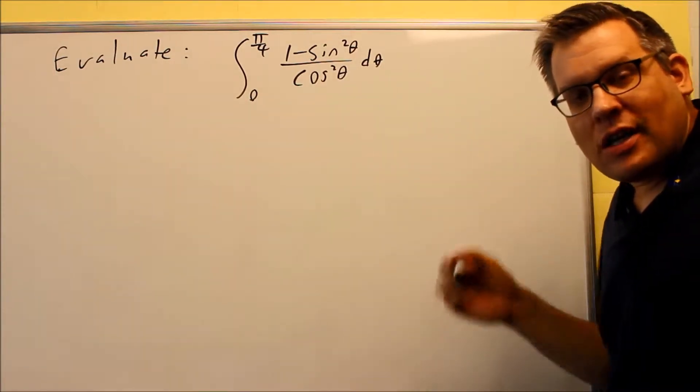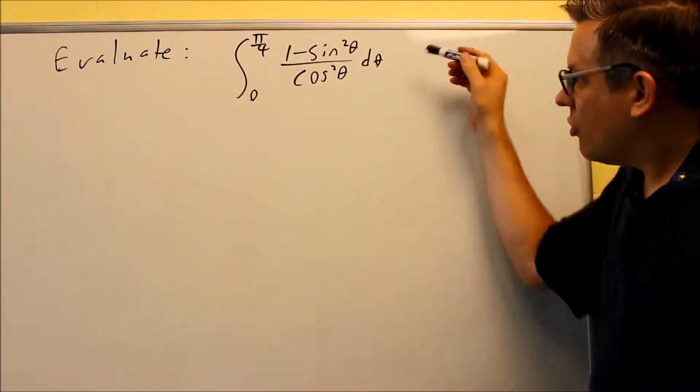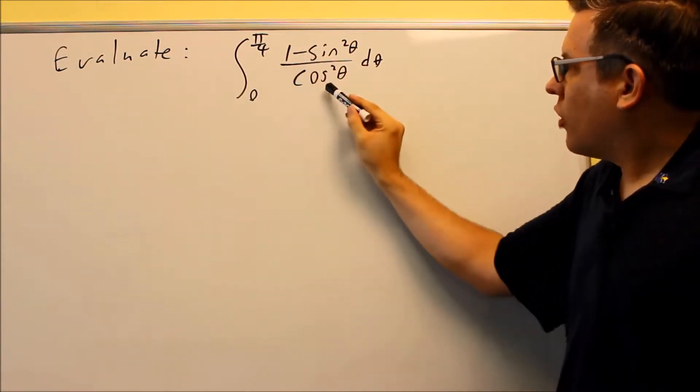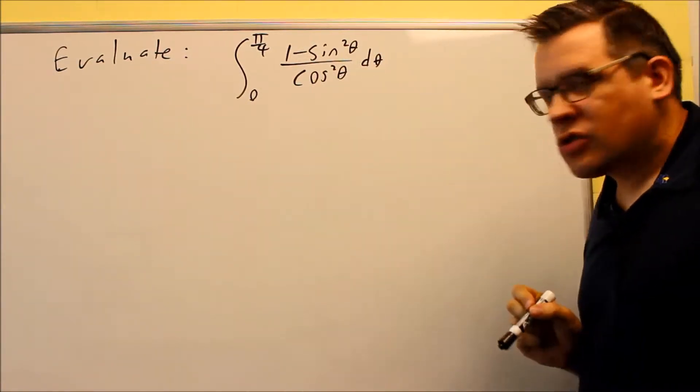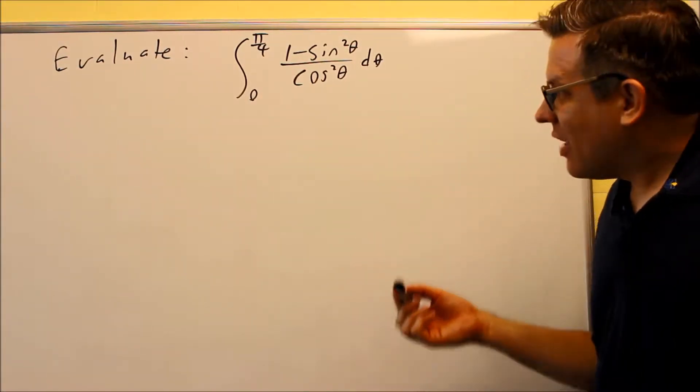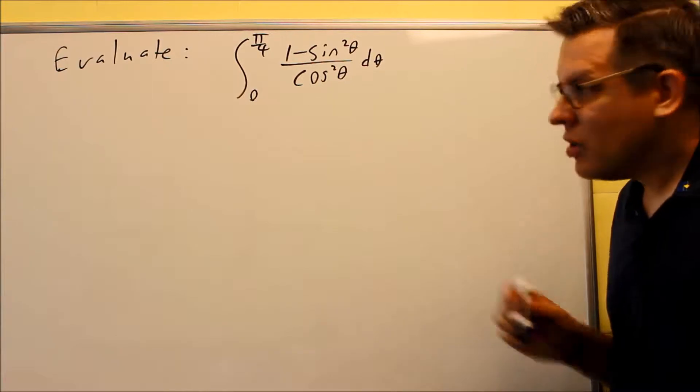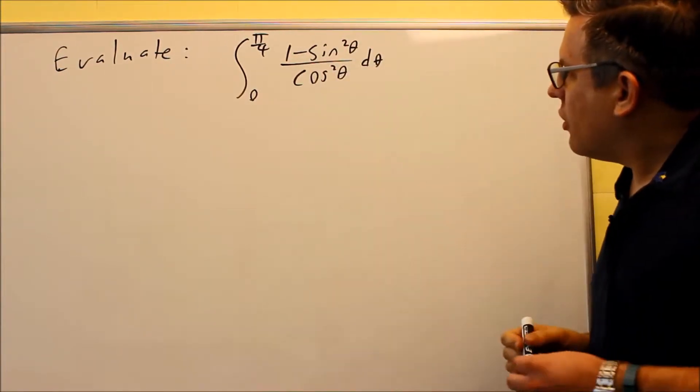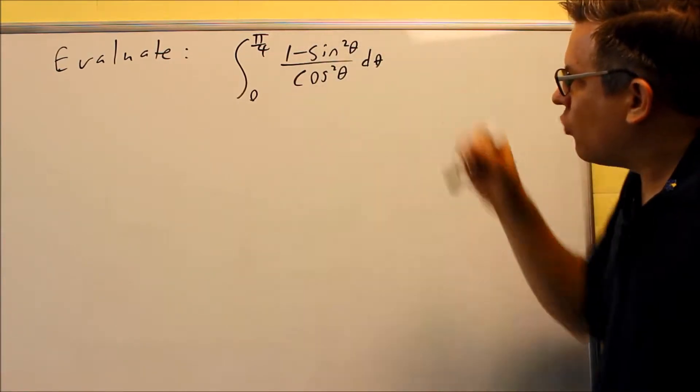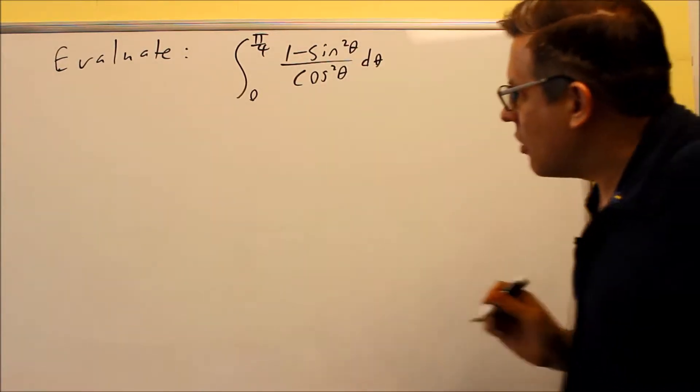Now, sometimes it's going to be easier if you use a trig identity first. Now, we could separate this and do 1 over cosine squared and sine squared over cosine squared. So we could do that and get secants and tangents, but that's actually making the problem more difficult. For here, there's actually an identity you can put in for 1 minus sine squared. And if you put that identity in, 1 minus sine squared is the same thing as cosine squared.